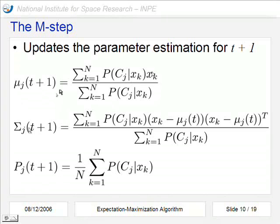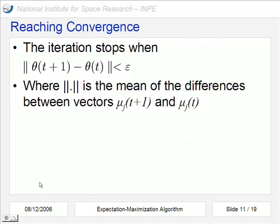The mean considers the probability and the attribute vector. The covariance matrix considers the probability and also the difference between the attribute vector and the mean for each class. And here the probability considers the sum of the whole probabilities for each class divided by the whole set of data.